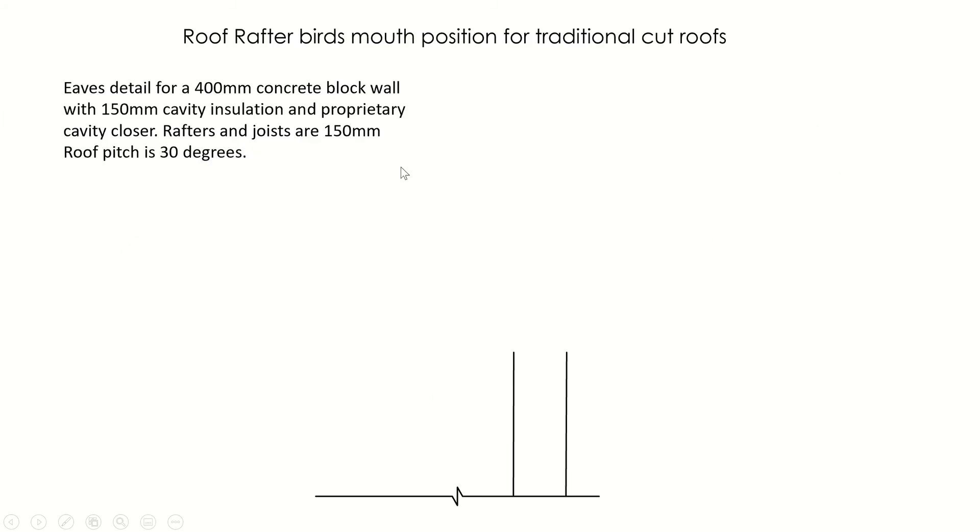The first thing I want to explain is the position of the rafter on the wall plate and how we figure out the distances. I have an example of an internal block wall going up. I'm going to put our wall plate in position now, our 75 by 100 wall plate. I'm drawing up a line here inclined at 30 degrees because the roof pitch is 30 degrees.